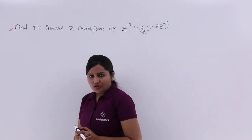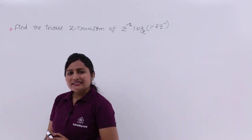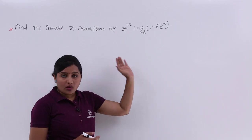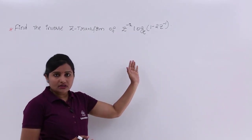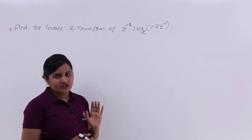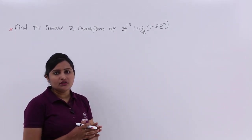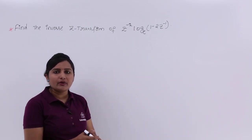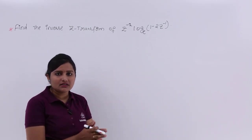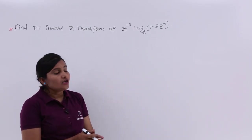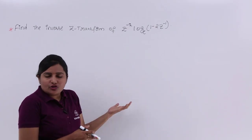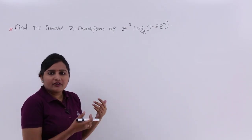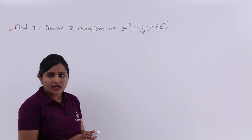Here, as I told you in Z-transforms, when you see logarithms in an inverse Z-transform you need to recall the differentiation in Z-domain property at that instant itself. We are going to solve this by using differentiation in Z-domain.